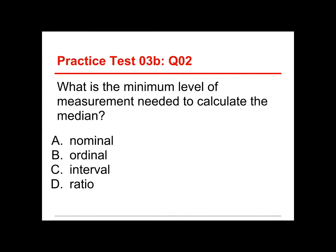Question number two, what is the minimum level of measurement needed to calculate the median? Well, to calculate the median, you have to choose between nominal, ordinal, interval, and ratio. The answer is ordinal, because to calculate the median, you have to at least be able to put things in order, so you can count in towards the middle.